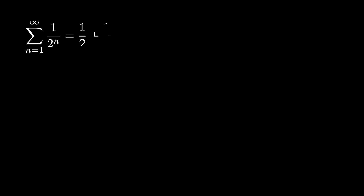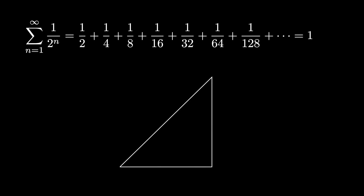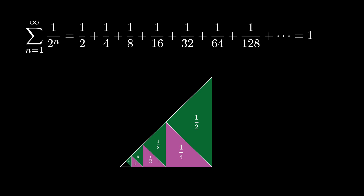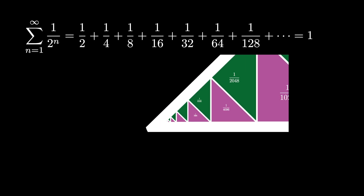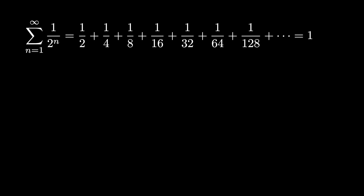You may be familiar with the infinite sum of the positive powers of 1/2: 1/2 plus a quarter plus an eighth and so on. This infinite sum equals 1, and you might have seen this visual proof that takes a right isosceles triangle of area 1 and decomposes it into areas consisting of the powers of 1/2. In the limiting diagram, each of the positive powers of 1/2 will appear, and therefore the infinite sum, which is the limit, must equal the full area of the triangle, which is 1.